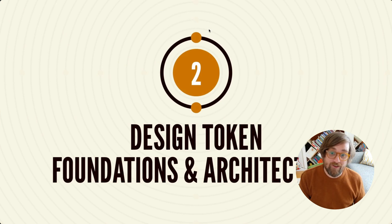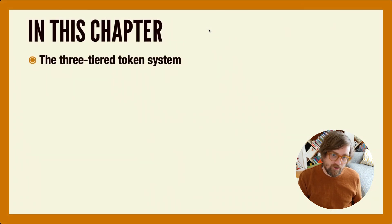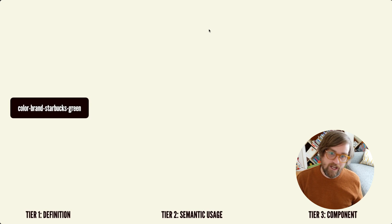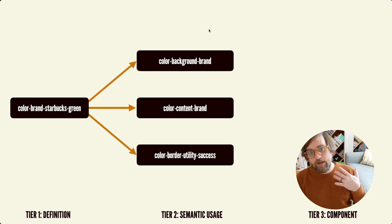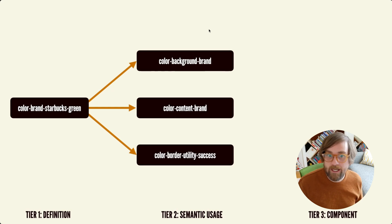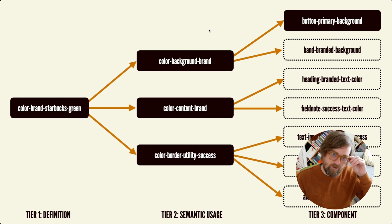Chapter two covers design token foundations and architecture. In this chapter, we're going to be introducing the three-tiered token system that is really the backbone of this whole course. The first tier defines all of the available ingredients in our design language. The second tier covers our semantic tokens, where we take those first-tier tokens and give them jobs to do in a user interface. And then the third tier handles component-specific tokens and other special use cases.